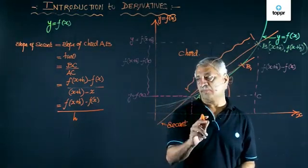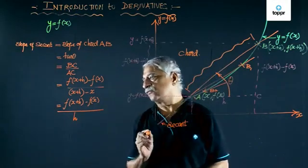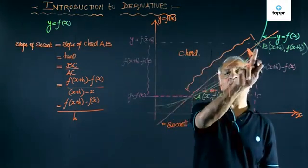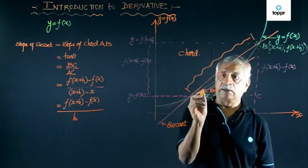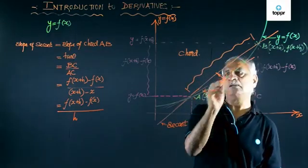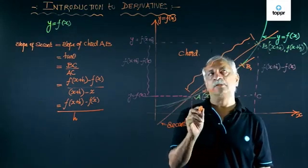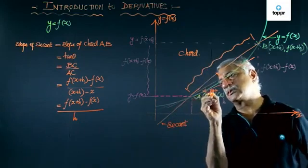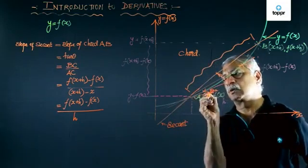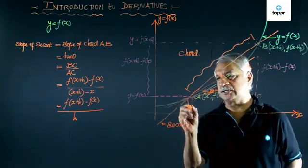But if I look at the formula what I have written, we will see that B cannot merge with A. But what happens if B was merging with A? Definitely, my secant would have become tangent. This becomes my tangent line.